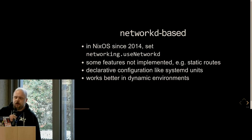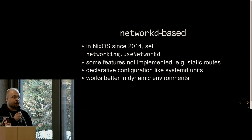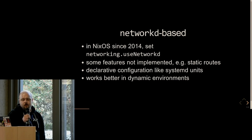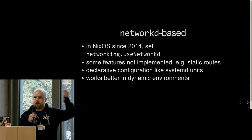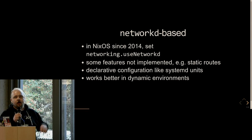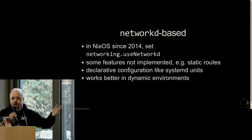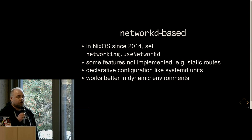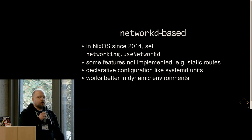On the other hand, we have a NetworkD-based networking backend that's been in NixOS since the end of 2014. You can just set networking.useSystemd to true, use your existing networking configuration like your interface IP configuration and default gateway, and it will generate the NetworkD configuration files. Unfortunately, some features currently in networking are not implemented — for example, static routes — so you might run into trouble there.